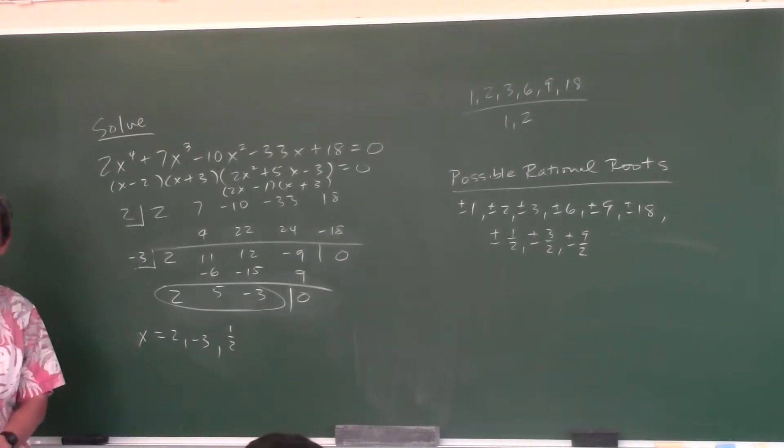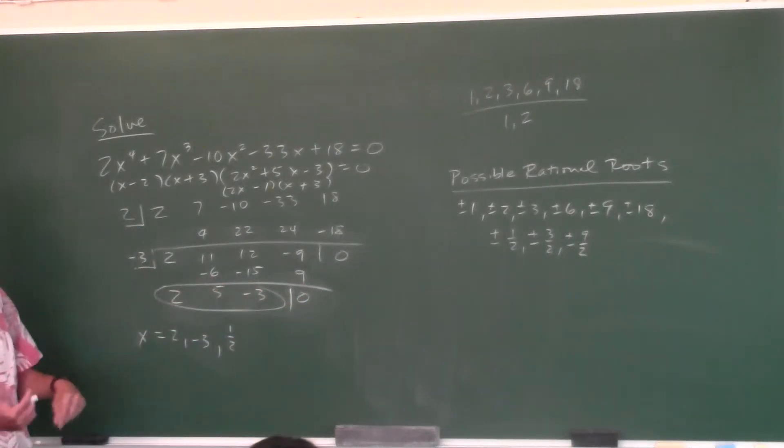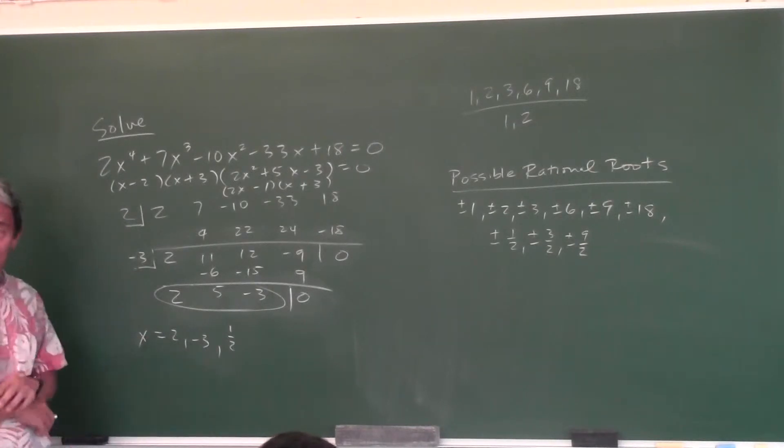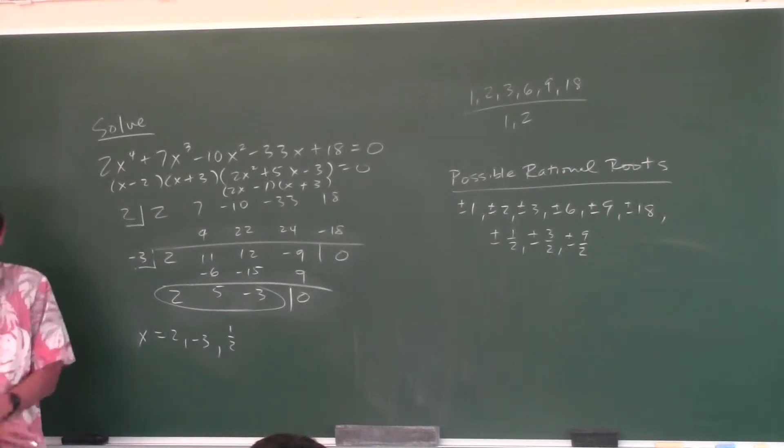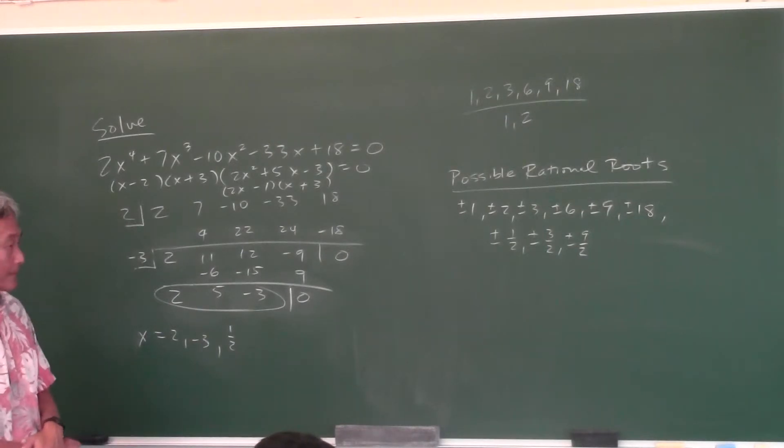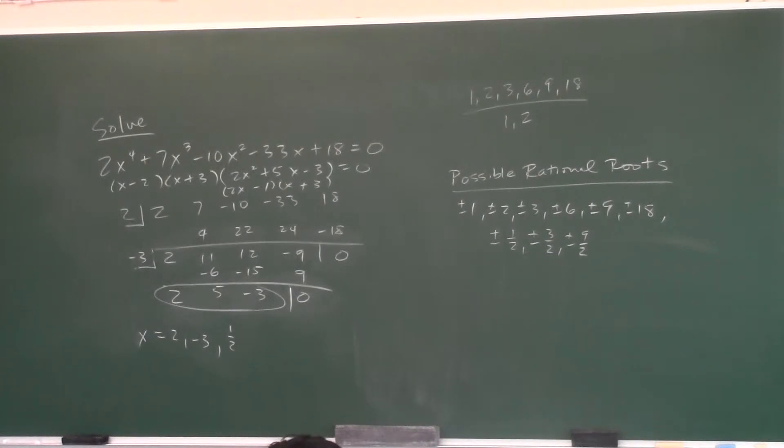So there you go. We didn't even have to worry about a lower bound because we hit it already. Is it possible for a positive number to be a lower bound? Not according to that theorem. See, when you synthetically divide by a positive number, you're looking for all non-negative coefficients. When you synthetically divide by a negative number, you're looking for alternating signs. So according to that theorem, no. But there might be another theorem where yes, but I don't know of those theorems there. So that's pretty much the lesson. Shall we just do a few problems as examples to reduce your homework?